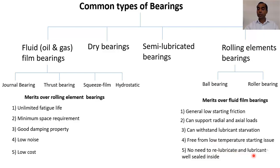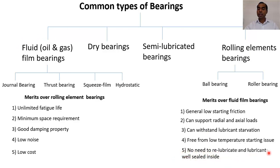Rolling element bearings have no need to re-lubricate frequently, and the lubricant is well sealed inside. In the case of fluid film bearings, a continuous good supply of lubricant is always needed, whereas in rolling element bearings some lubrication is sufficient and can be sealed inside the bearing, making it a clean form of bearing.